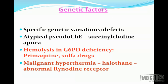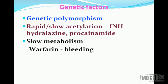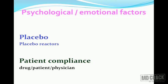Hemolysis can be precipitated in glucose-6-phosphate dehydrogenase deficient patients exposed to primaquine or sulfonamide drugs. Malignant hyperthermia can be precipitated by halothane in patients with an abnormal ryanodine receptor. Genetic polymorphism leads to rapid and slow acetylators for drugs like isoniazid, hydralazine, and procainamide. Warfarin can produce bleeding in those patients who are slow metabolizers.